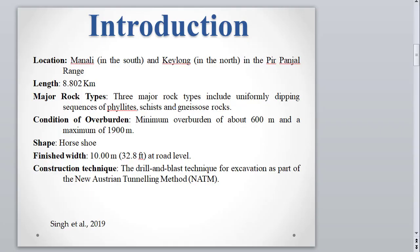The Rohtang Tunnel connects Manali in the south and Keylong in the north in the Pir Panjal range. The total length of the Rohtang Tunnel is 8.802 kilometers. The major rock types are alternating bands of uniformly dipping phyllite, schist, gneiss, and some migmatites. Due to this complex geology, there were many geological surprises during construction.